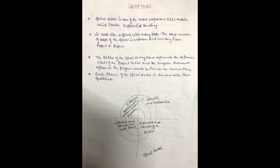The spiral model is basically divided into four quadrants. The first quadrant is objective determination and identify alternative solutions. The second phase is identify and resolve risk. The third phase is develop the next version of the product. The fourth phase is review and plan for the next phase.